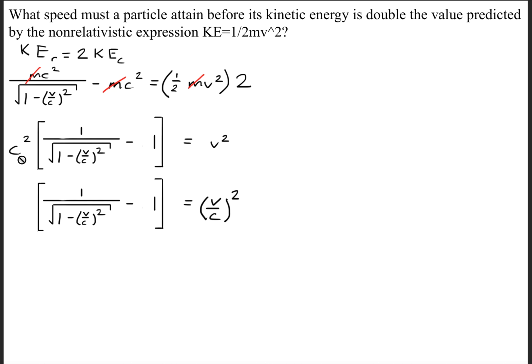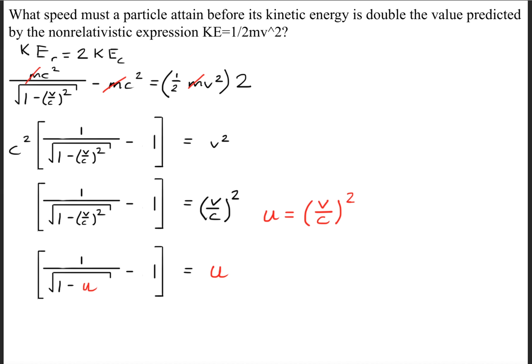Next, we'll divide the speed of light squared to both sides of the equation so that we can simplify it down to this form right here. Next, we're going to make a substitution. This v over c squared, we're just going to call that u. So u represents v divided by c raised to the second power. If we make our u substitution, we get that 1 divided by the square root of 1 minus u minus 1 is equal to u.